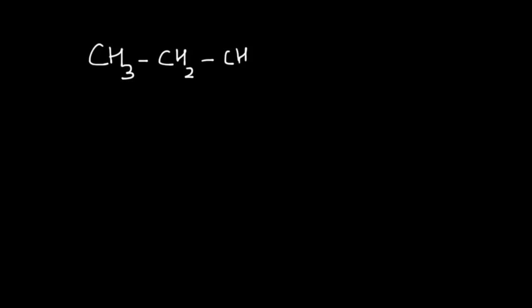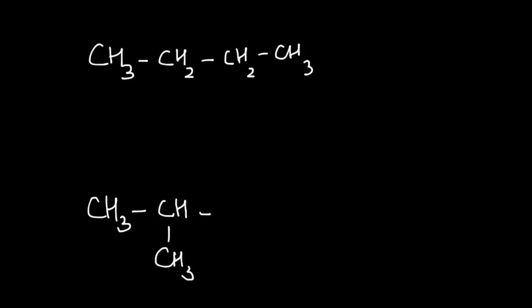We have two compounds: CH3CH2CH2CH3 and CH3CH(CH3)CH3. Both of these are alkanes. Let's first verify that their molecular formula is the same — that is the first thing you should check. If you count the carbon atoms in the first compound, you get 4 carbon atoms and 10 hydrogen atoms, so the molecular formula for the first compound is C4H10.